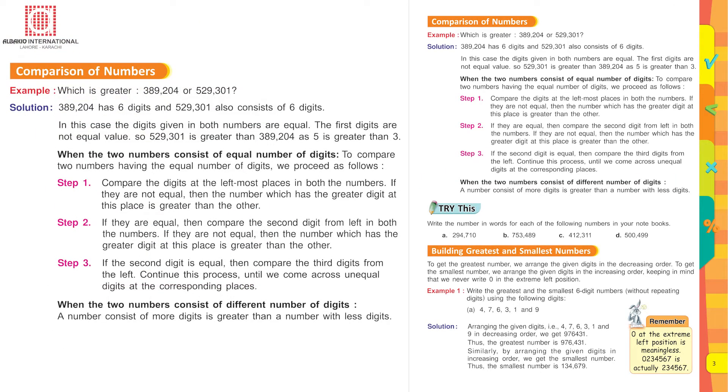Comparison of numbers. Which is greater? 389,204 or 529,301. For this you have to count the digits. Step 1 is compare the digits at the left most places in both the numbers. If they are not equal then the number which has the greater digit at this place is greater than the other.